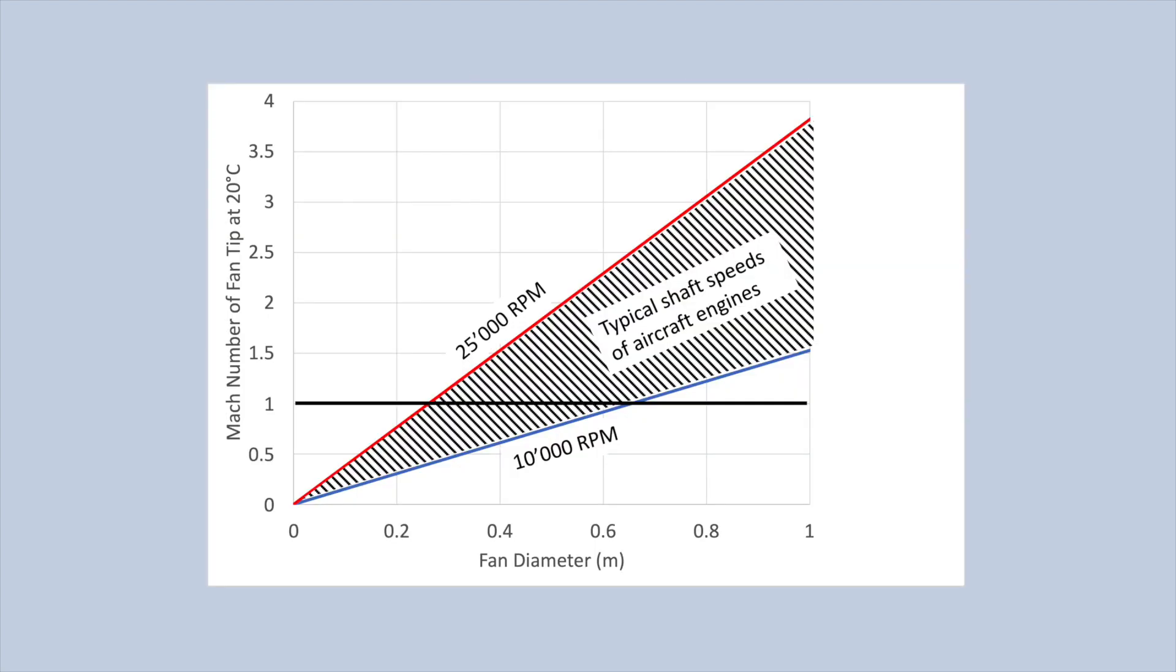Typically, the shaft speed for aircraft gas turbines is in the range between 10,000 and 25,000 rpm. You can see that as the diameter of the fan increases for a single shaft turbofan engine, the Mach number of the fan tip quickly reaches 1, and the flow of the tip becomes supersonic. To give a reference on this chart, the GE90 engine, which powers the Boeing 777, has a fan diameter of more than 3 meters.